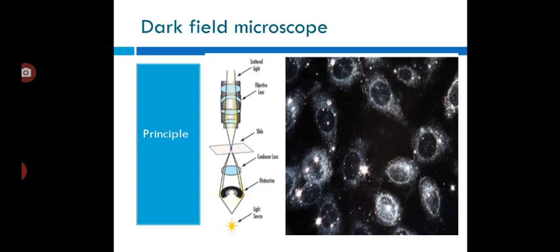The uses of this microscope: it is useful for the demonstration of very thin bacteria not visible under ordinary illumination, since the reflection of light makes them appear larger. It's a frequently used method for rapid demonstration of Treponema pallidum in clinical specimens.